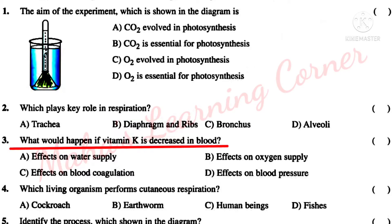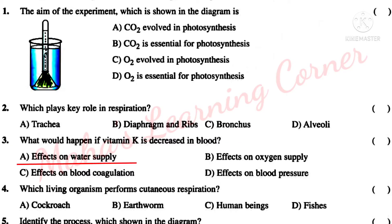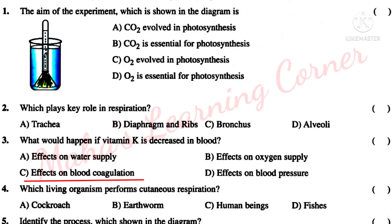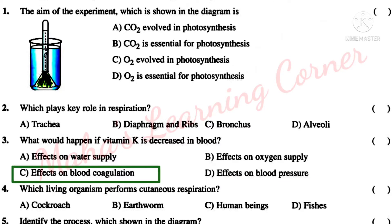Third question: what would happen if vitamin K is decreased in blood? Option A: Effects on water supply. Option B: Effects on oxygen supply. Option C: Effects on blood coagulation. Option D: Effects on blood pressure. Correct answer: C — Effects on blood coagulation.